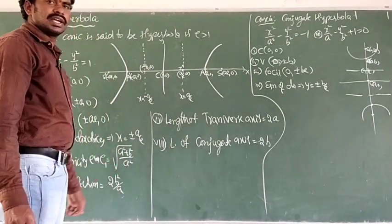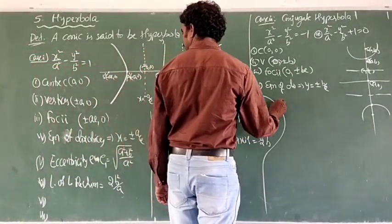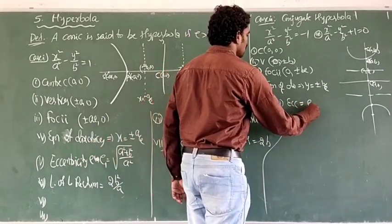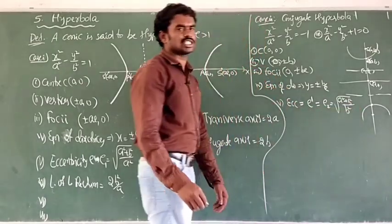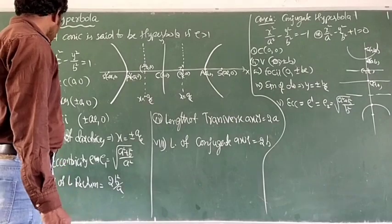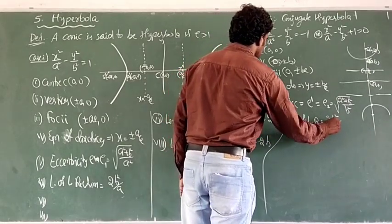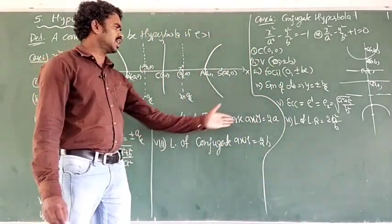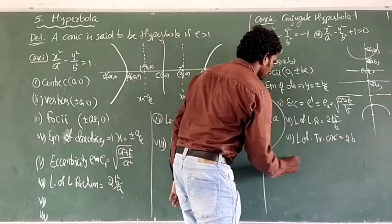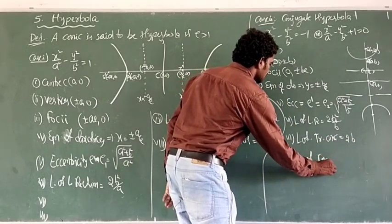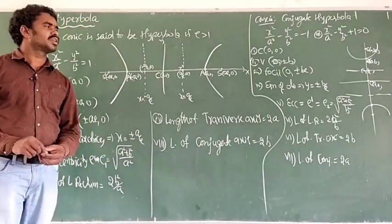For conjugate hyperbola: length of latus rectum is 2a²/b, length of transverse axis is 2b, and length of conjugate axis is 2a. These are the important key points for the conjugate hyperbola case.